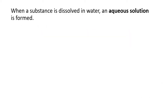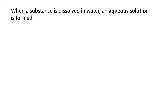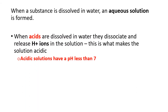Whenever you dissolve a substance in water, you form what we call an aqueous solution, which we know uses the state symbol AQ when we write out chemical reactions. If you've got an acid being dissolved in water, you form an acidic solution, and those solutions have a pH of less than 7.